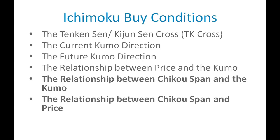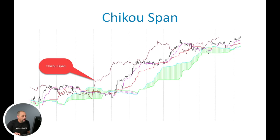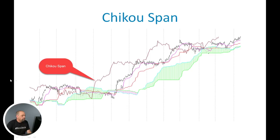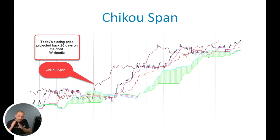The last indicator is the Chikou Span line — the last line on the chart we haven't talked about yet, and it's important in the analysis of Ichimoku. The Chikou Span always trails price by about 26 periods. It is simply the closing price plotted back in time about 26 periods — so the Chikou Span is going to be the close 26 bars ago. The way it's used on a chart is by looking at its relationship to both the Kumo and the price to make an analysis decision on what you're going to do with the Ichimoku.